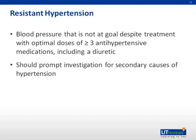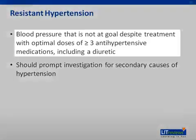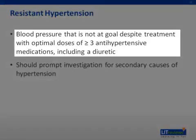There are some patients who fail to reach blood pressure targets despite typical medical management. These patients may have resistant hypertension, which is defined as blood pressure that is not at goal despite treatment with optimal doses of three or more antihypertensive medications, one of which is a diuretic. Patients with resistant hypertension should be evaluated for secondary causes of hypertension.